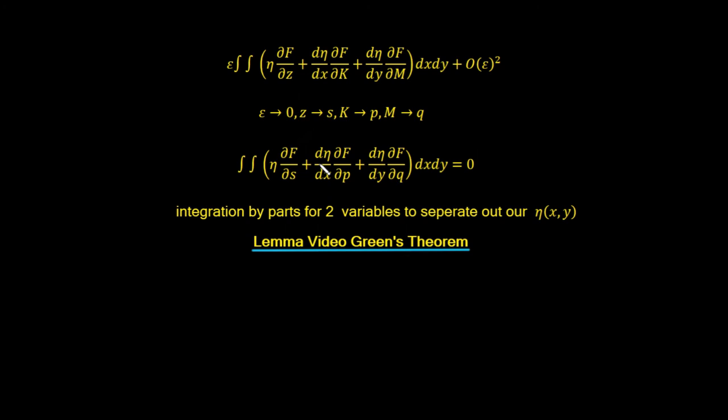On the next video, we'll work through Green's theorem and apply it to separate out and find the final differential equation — which will be the Euler-Lagrange equivalent for this functional of two independent variables. That's all for this video. Thank you for listening.